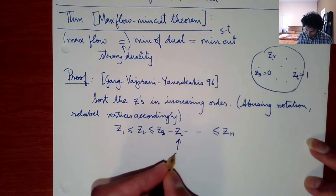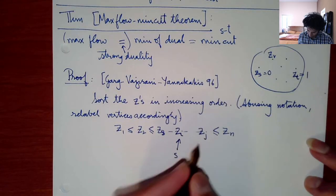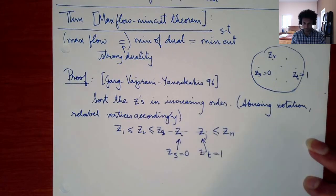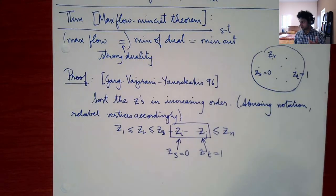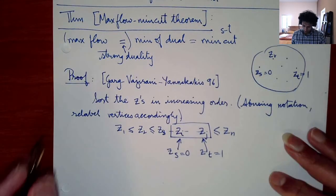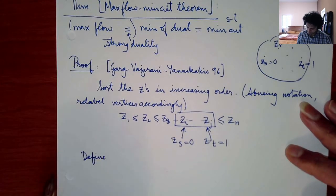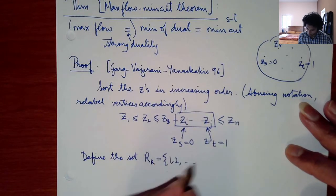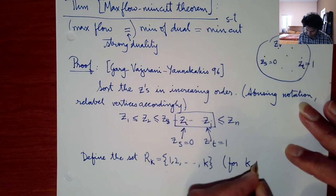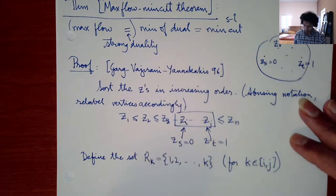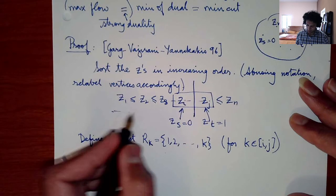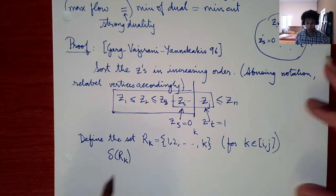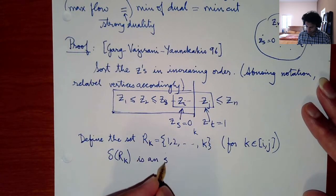Somewhere in this sorted list S appears with Z_s = 0, and somewhere later T appears with Z_t = 1. Define the set R_K to be the first K vertices for some K in the range between S and T's positions. The cut delta(R_K) from R_K to the rest is an ST cut.